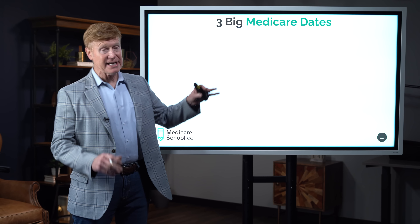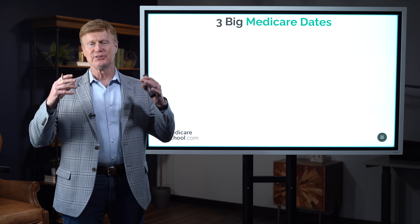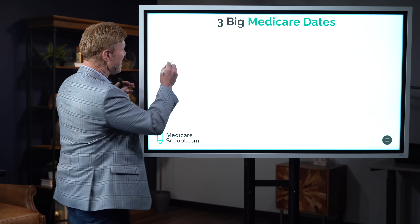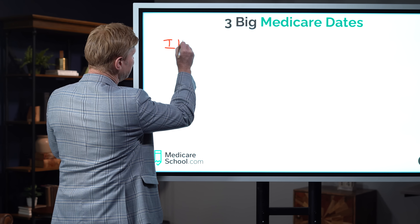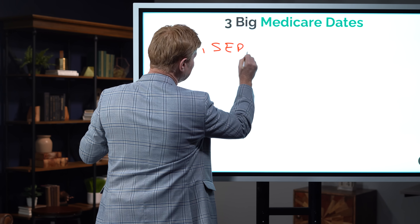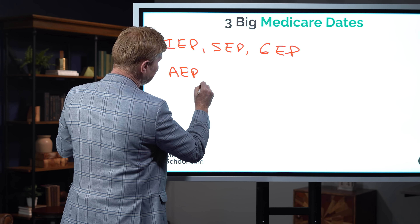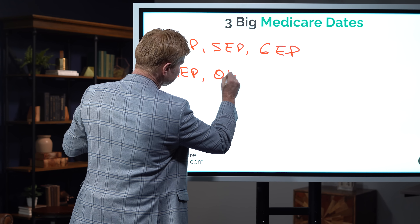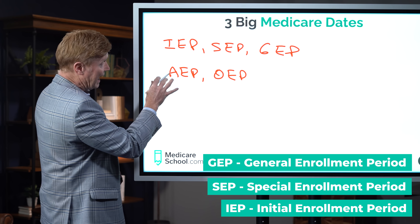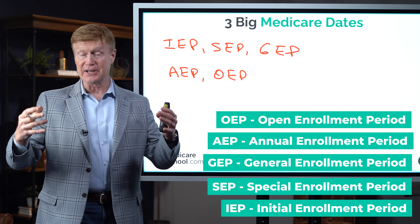I want to begin by talking about three very important Medicare dates. But first, I want to explain a couple of acronyms you will come across in Medicare. Those acronyms are usually three letters: IEP, SEP, GEP, AEP, and OEP. These stand for Initial Enrollment Period, Special Enrollment, General Enrollment, Annual Enrollment, and Open Enrollment Period. These are very important acronyms to understand.